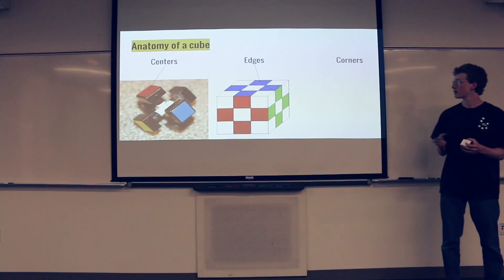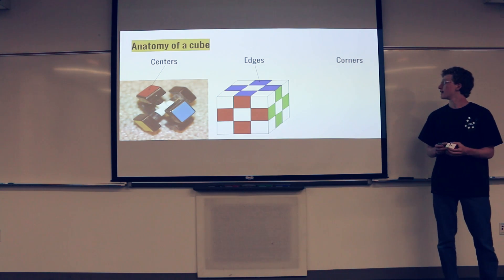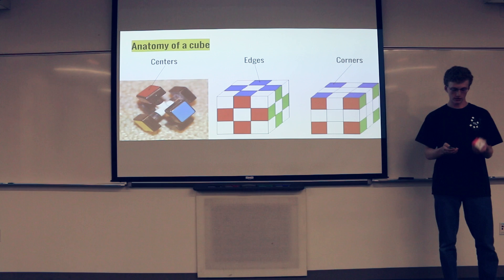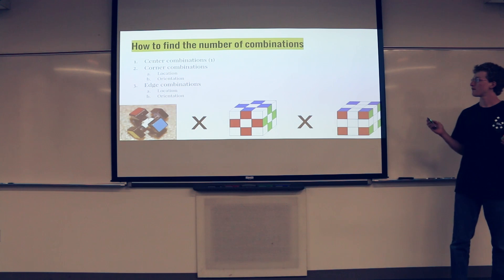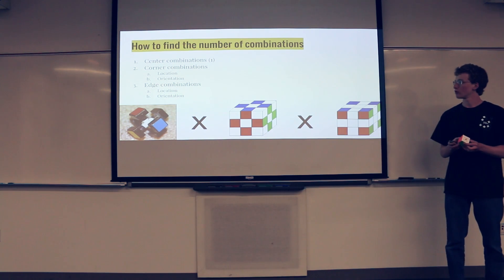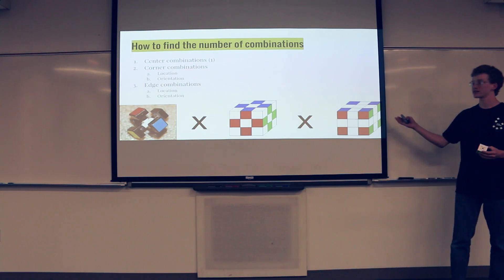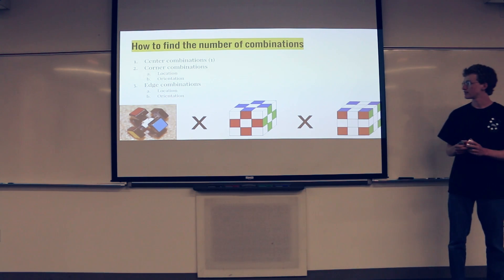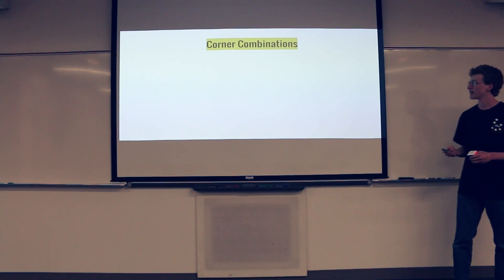The edge pieces, there are 12 edge pieces. Each one has two colors. They, of course, do move. And then there are eight corner pieces, and each one has three colors. So to find that, the reason we know that number, to find the number of combinations, we will multiply the center combinations, which is one, because they're always in the same arrangement, with the corner combinations and edge combinations. And there are two aspects to finding each of these combinations. There is location, which refers to where a piece is on the cube, and orientation, which refers to how that piece is turned.